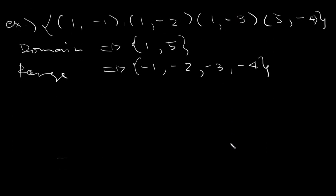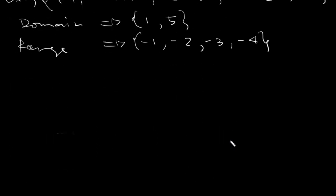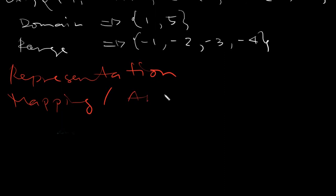Those were three examples of a relation. Now, when it comes to relations, we also have representations for them — meaning we can show a relation in different ways. One good way of identifying the kinds of relation based on pairing is what we call the mapping, or the arrow diagram.